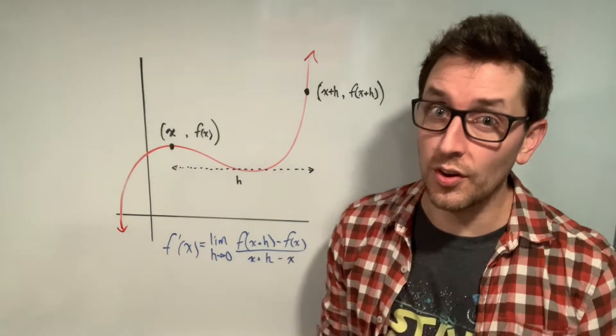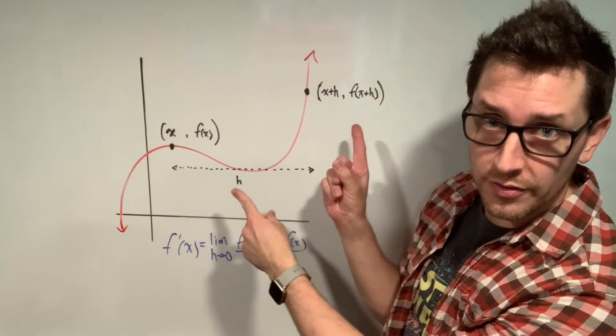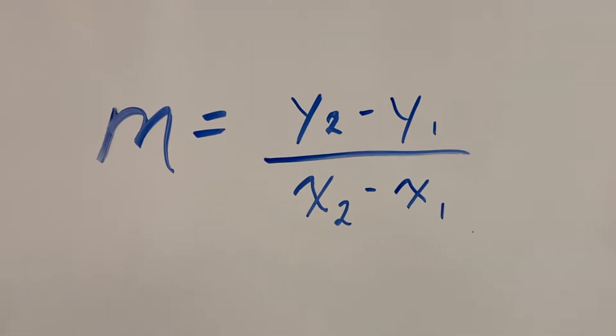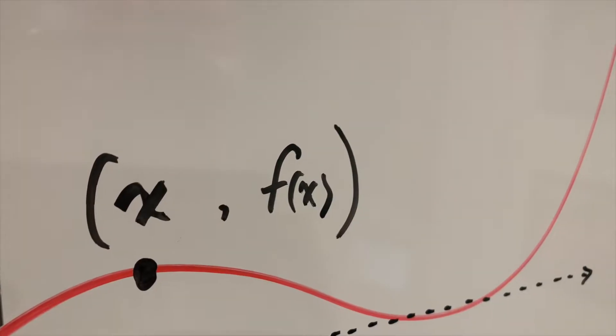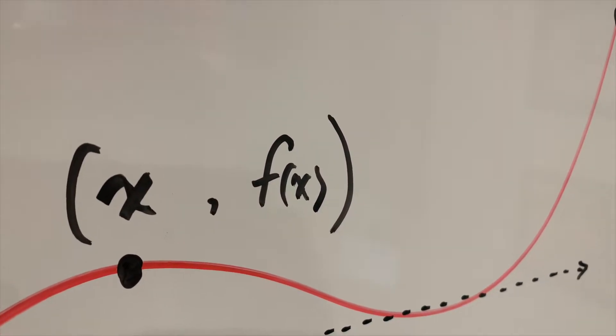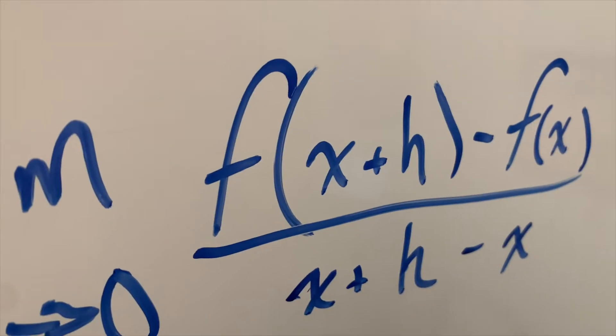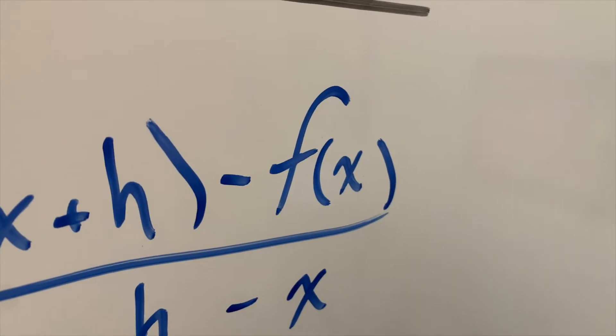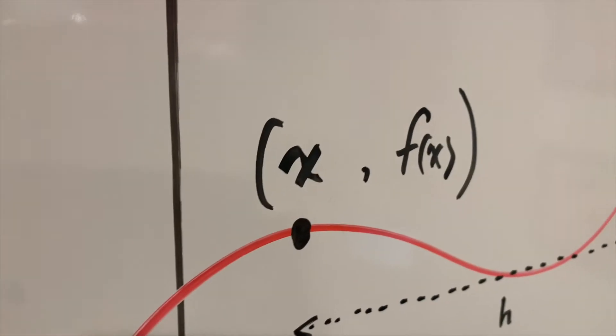To tie all this together, let's imagine that you were going to calculate the slope of a line joining these two points using your y2 minus y1 over x2 minus x1 definition of slope. Our y2 would be this f at x plus h, while our y1 would just be f at x. And if we look at our first principle's definition of the derivative, we have our f x plus h, and we're subtracting f at x. We then take x plus h and subtract x.